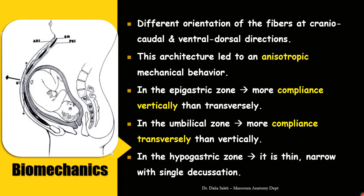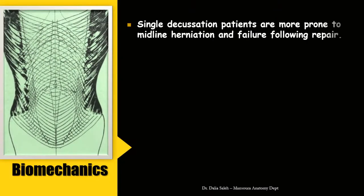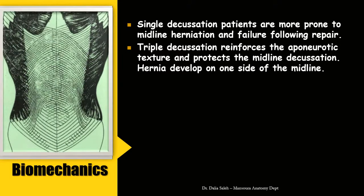In the hypogastric zone of the linea alba, because of the approximation and even overlap of the rectus abdominis muscles, the linea alba is thin, narrow, and made of a single decussation. People with single decussation at the linea alba are more prone to midline herniation and failure following repair because the stitches will slip off. Triple decussation, especially in the epigastric zone, reinforces the aponeurotic texture and protects the midline from developing a hernia.